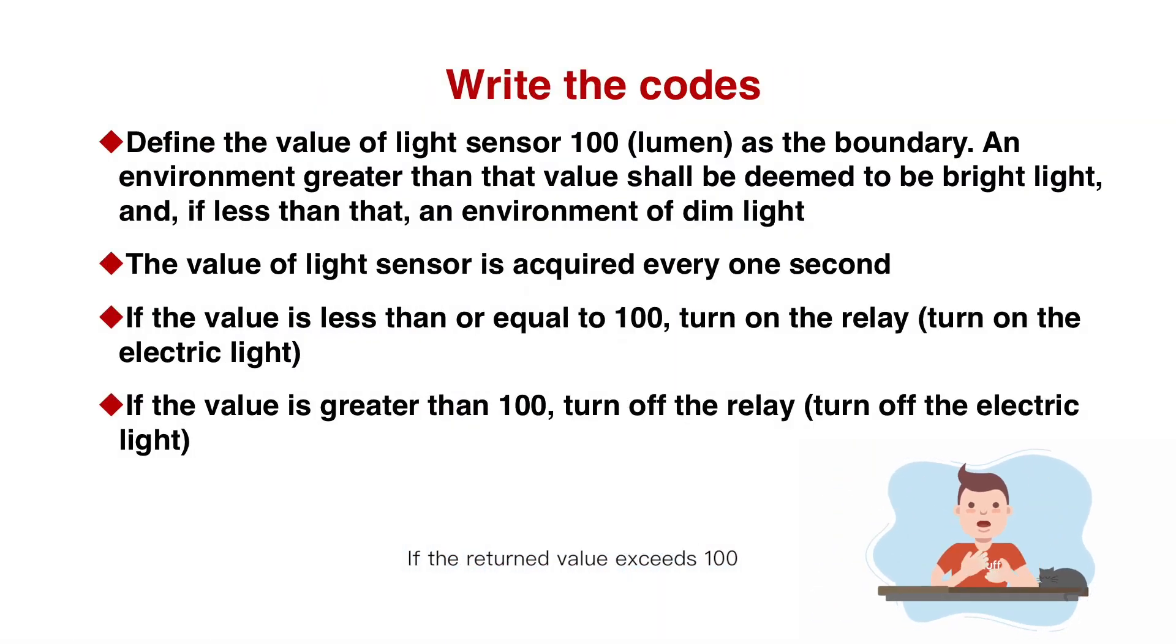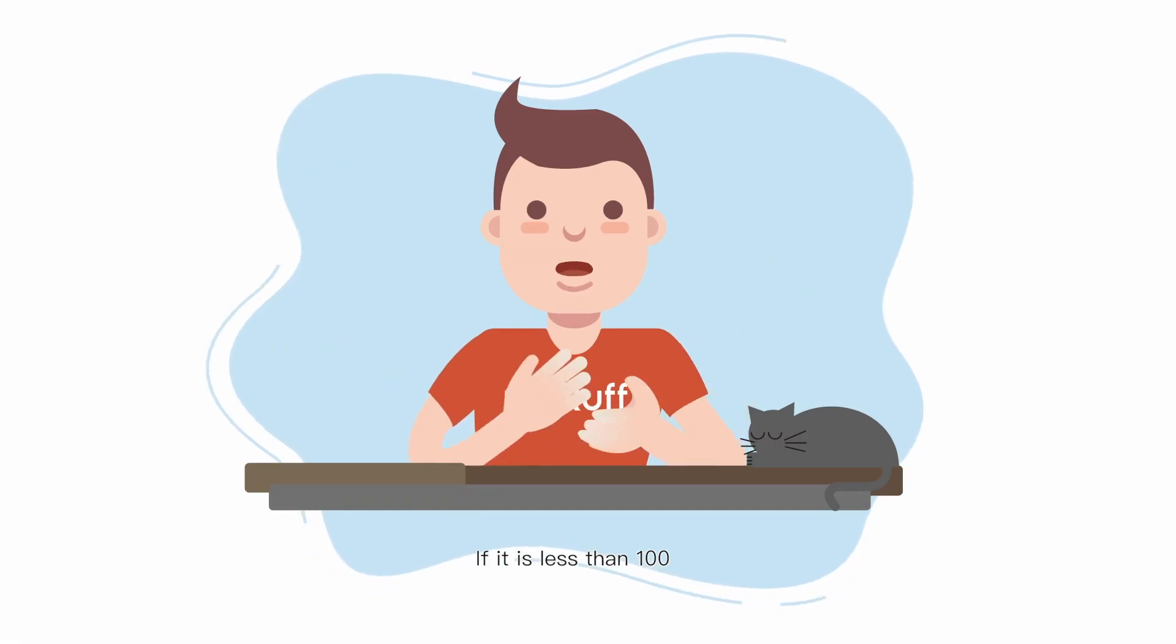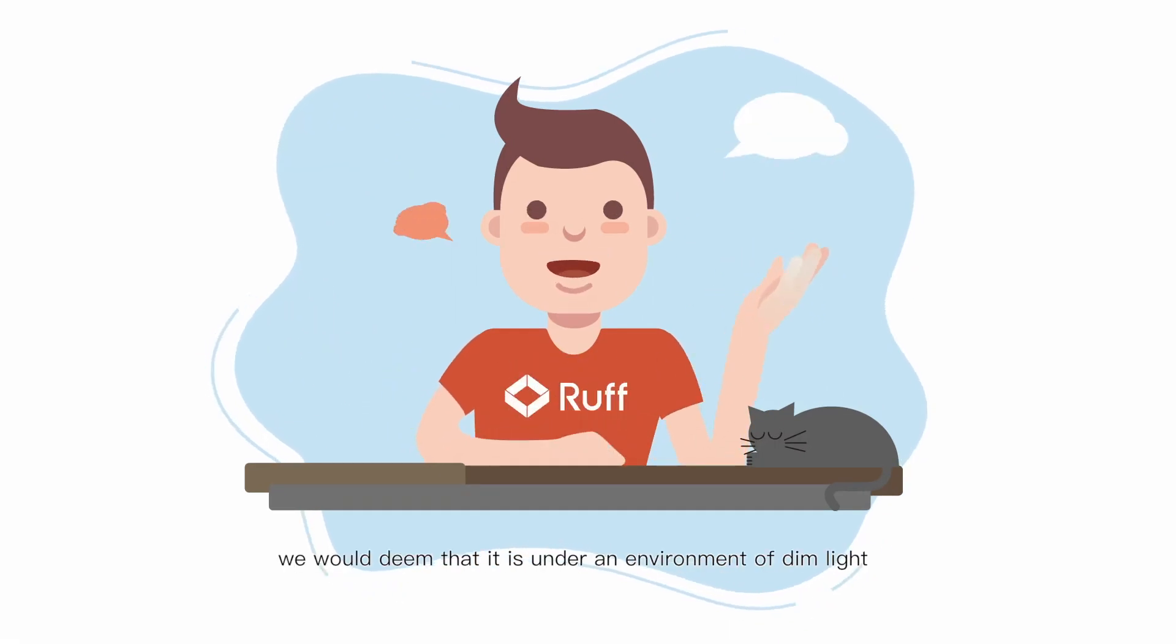If the return value exceeds 100, we would think that the light sensor is under an environment of bright light. If it is less than 100, we would deem that it is under an environment of dim light.